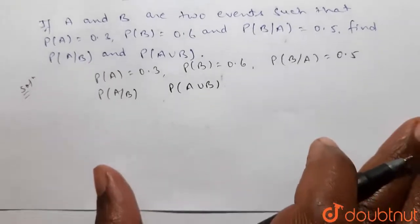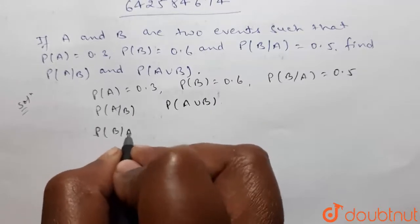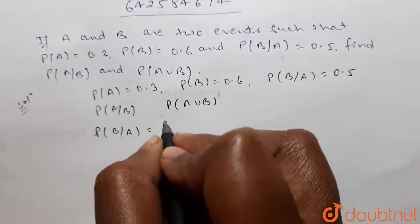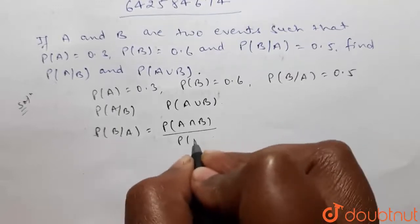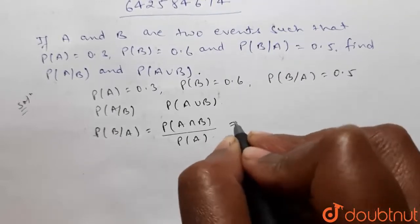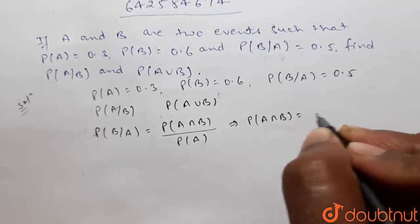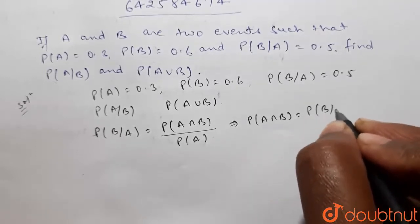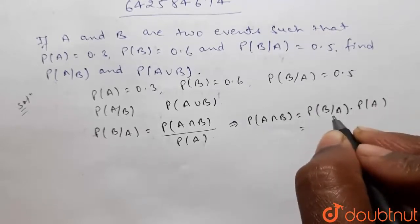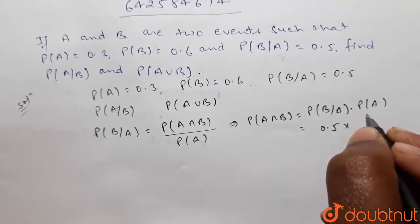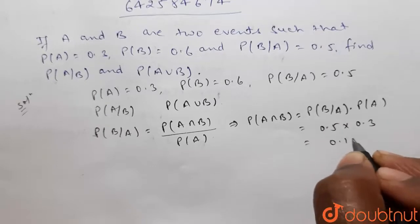Now, probability of B given A is equal to probability of A intersection B divided by probability of A. From here we get probability of A intersection B equals probability of B given A multiplied by probability of A. Probability of B given A is 0.5 and probability of A is 0.3, so this will be equal to 0.15.